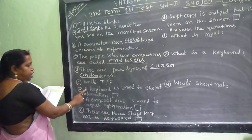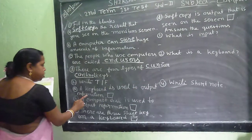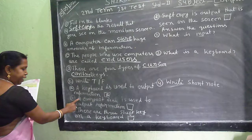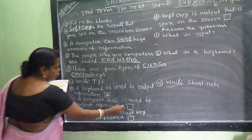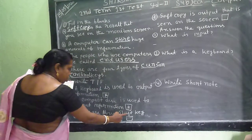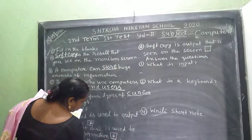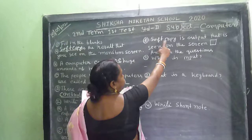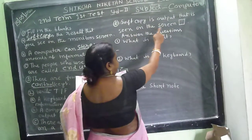True or false: a keyboard is used to output information — false. A compact disc is used to output information — false. There are thirty-six keys on a keyboard — false. Soft copy is output that you see on the screen — true.